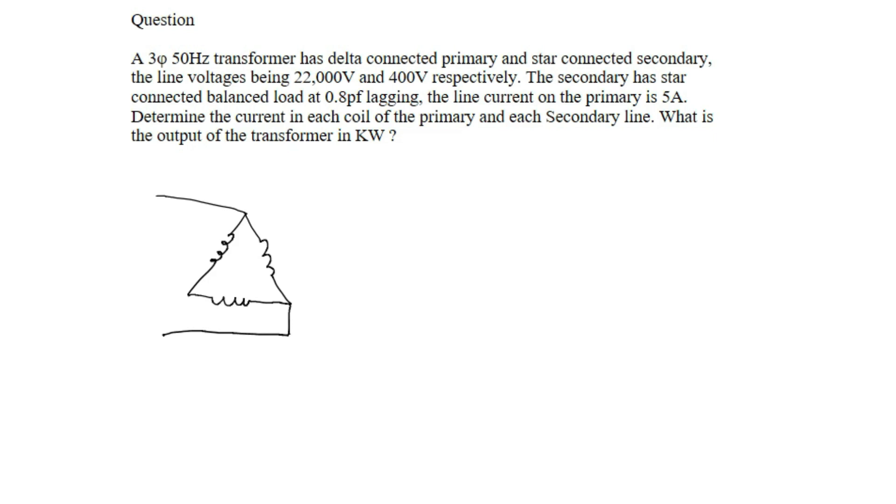The line voltages are 22,000 volts and 400 volts respectively. The secondary has a star-connected balanced load at 0.8 power factor. This is what the circuit looks like.